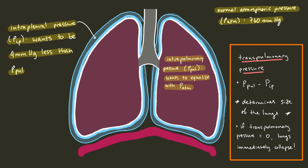The transpulmonary pressure is the difference between the intrapulmonary pressure and the intrapleural pressure. It's this pressure that determines the size of the lungs — the larger it is, the larger the lungs. If the transpulmonary pressure is zero, that is, if the intrapulmonary and intrapleural pressures equalize, this would immediately cause the lung to collapse, which would make it really hard to breathe.